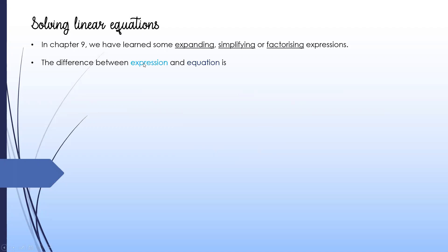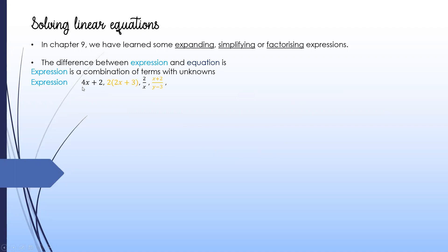What is the difference between expression and equation? An expression is actually a combination of terms with an unknown — just like 4x plus 2. You have one unknown here and another term here, a first term and second term. You may have different types, but as long as we have an unknown, we call this an expression.